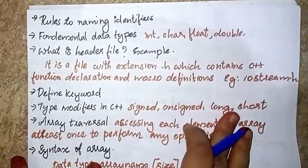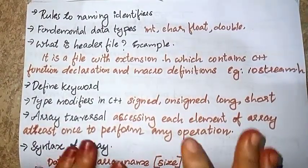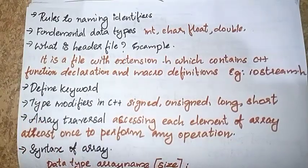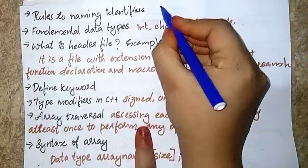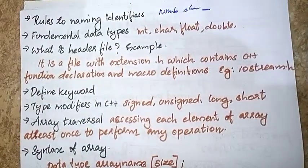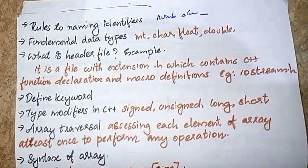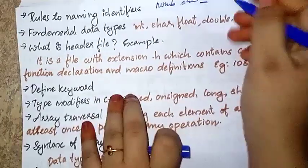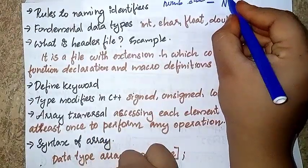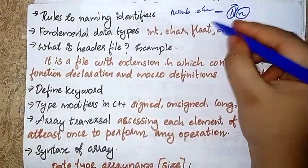The next one is rules for naming identifiers. We will identify the rules. You cannot use whitespace or special characters. You can use numbers, characters, and underscores. An identifier must start with a character. Now we have the value and meaning of C++ identifiers.